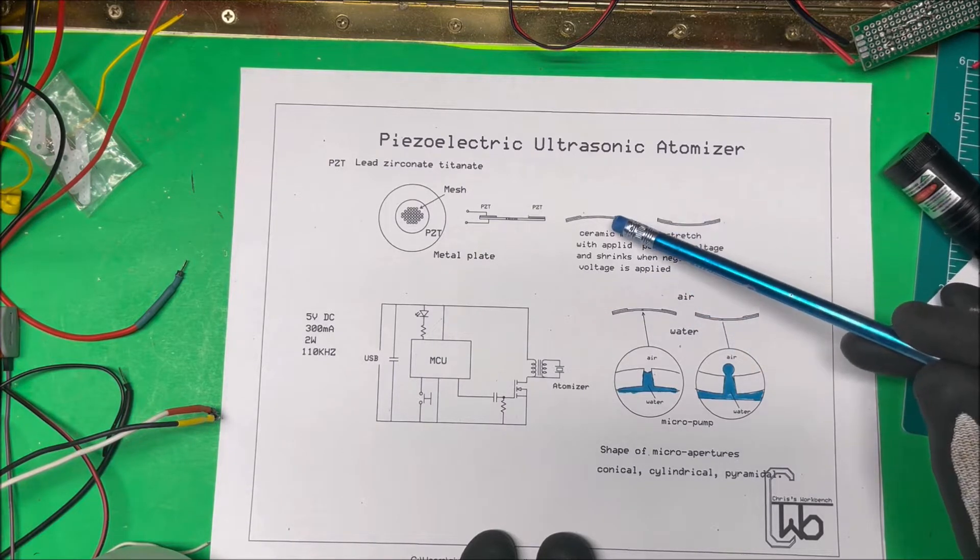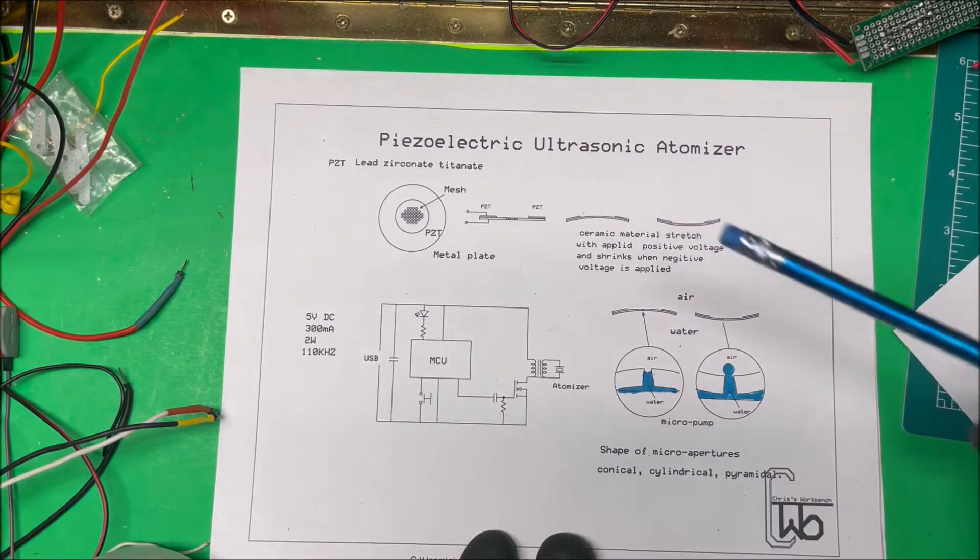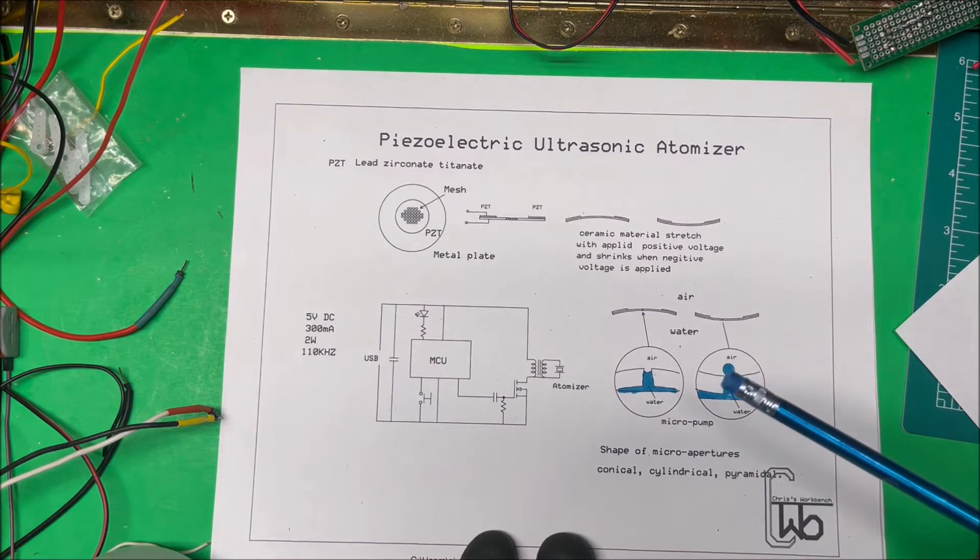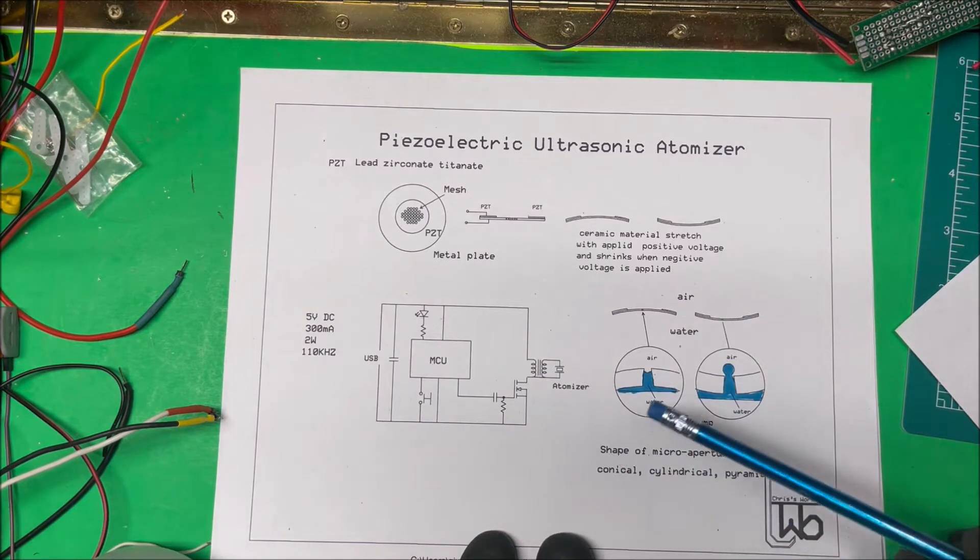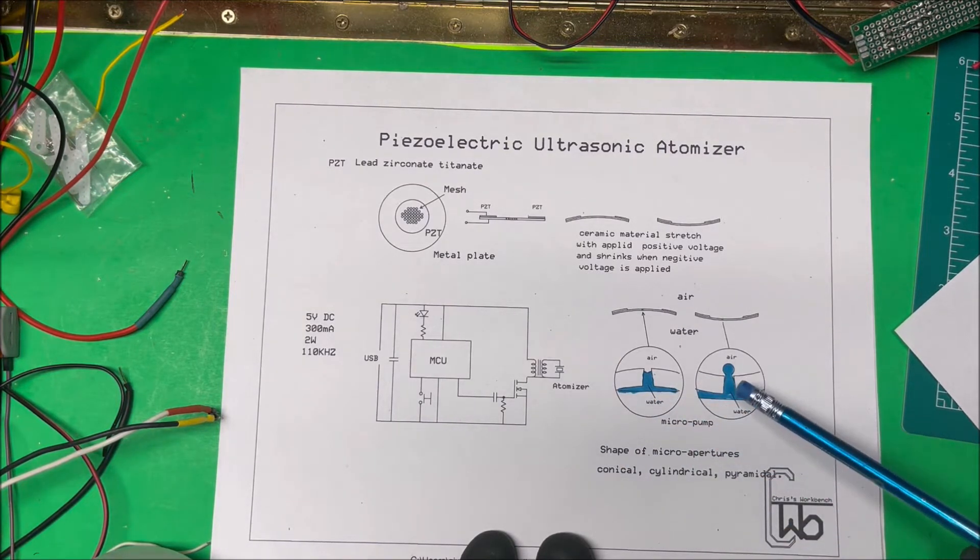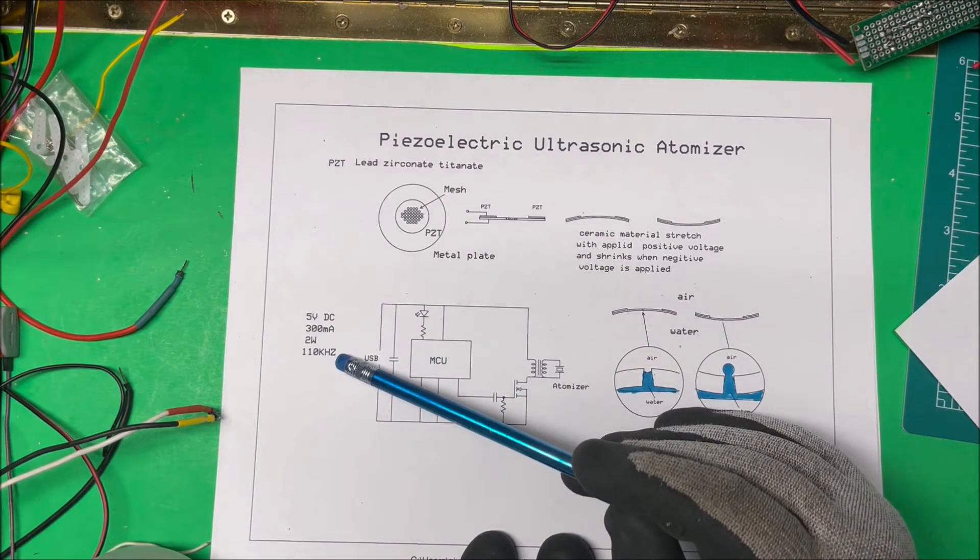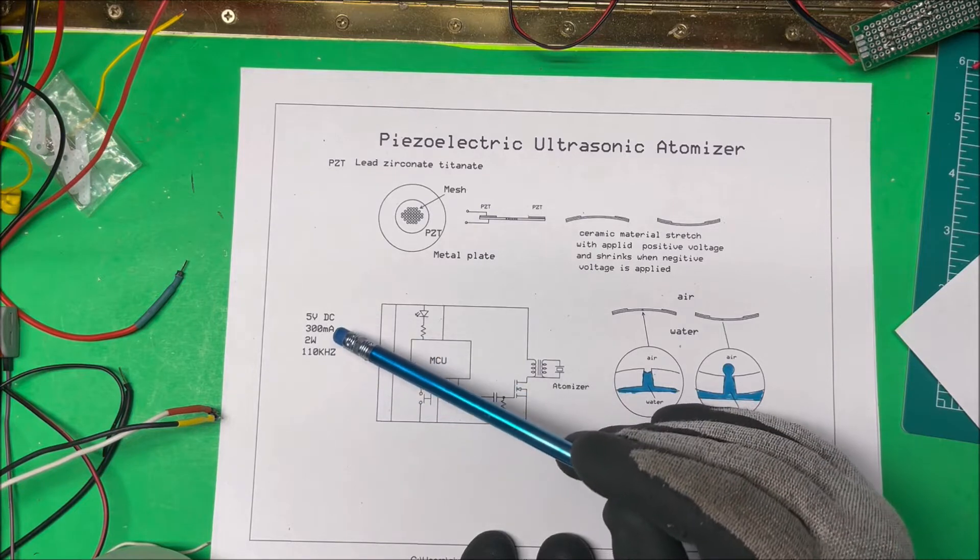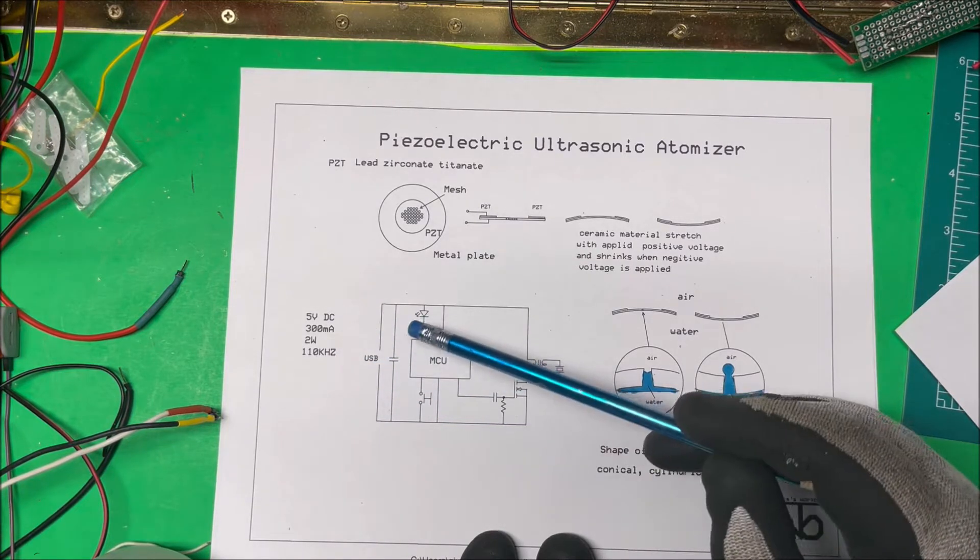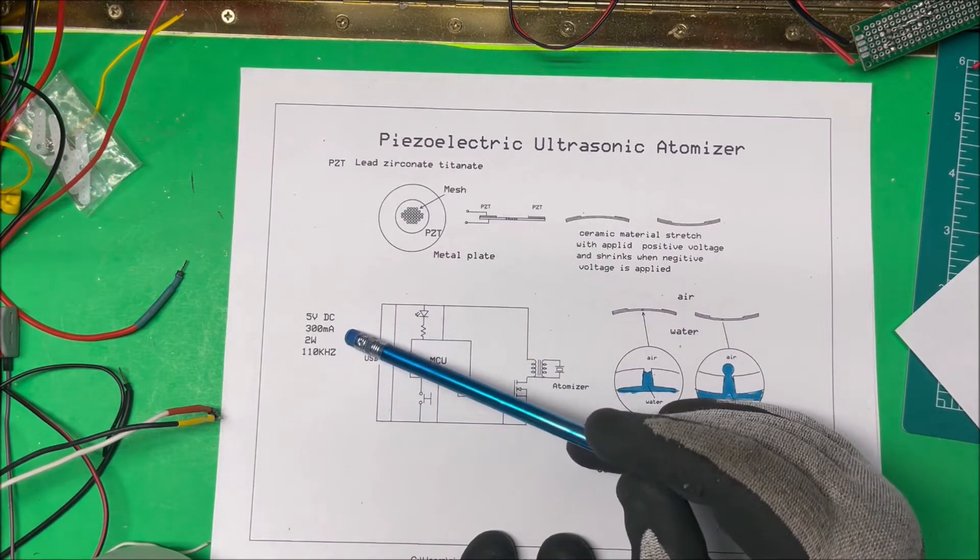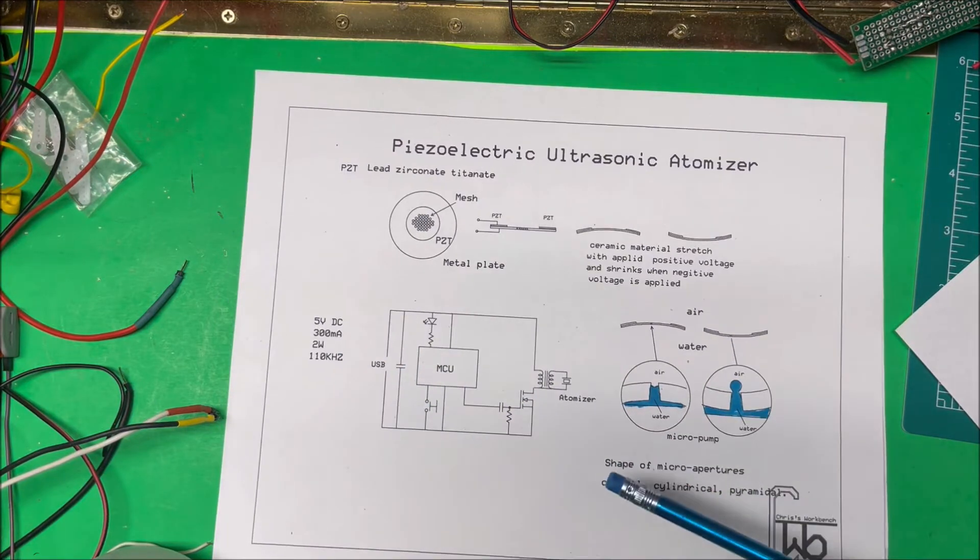For the buzzer, that just puts your sound out and that's fine, but in order for this atomizer to work we need to pump some water through these little microscopic holes here. So we need to do that at about 110 kilohertz, and this one has a 5 volt DC in, 300 milliamps, and 2 watts.